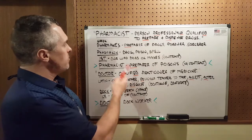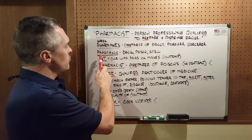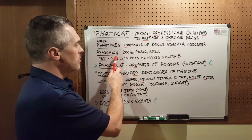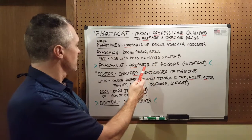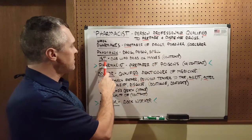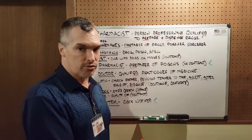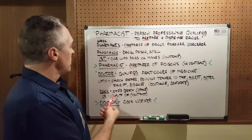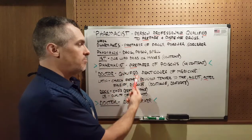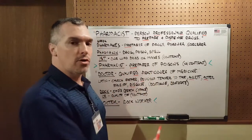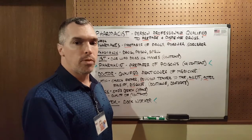And then you go back further from pharmakes to pharmakon, which is drug, poison, or spell. And then the suffix -ist means one who does or makes, which is a contract. So a pharmacist really is a preparer of poisons, or someone with a contract to prepare poisons.